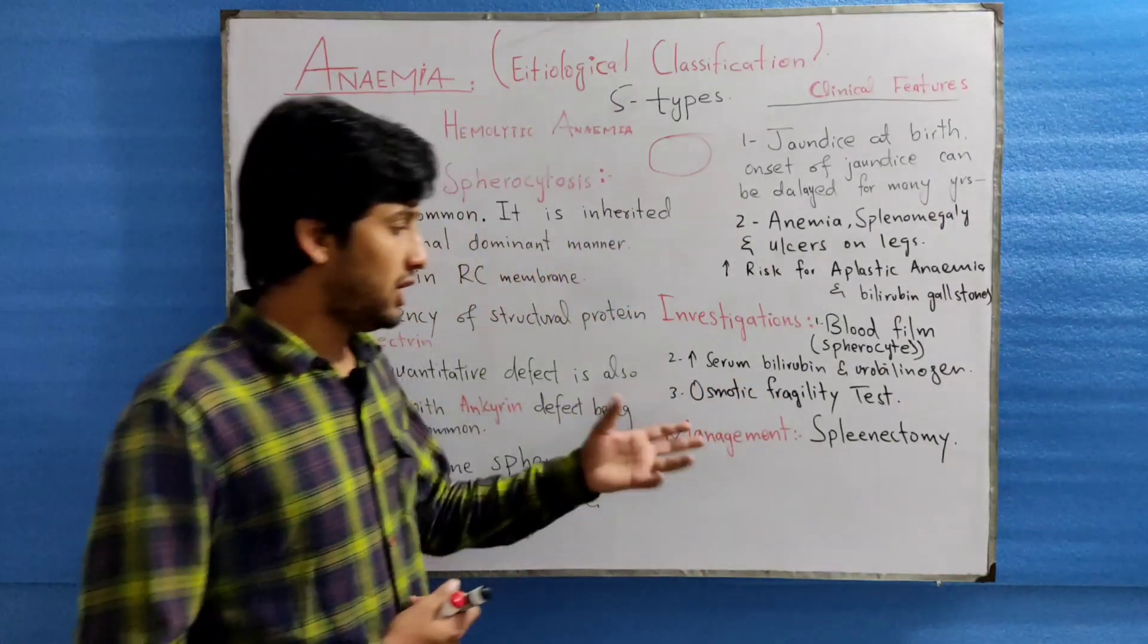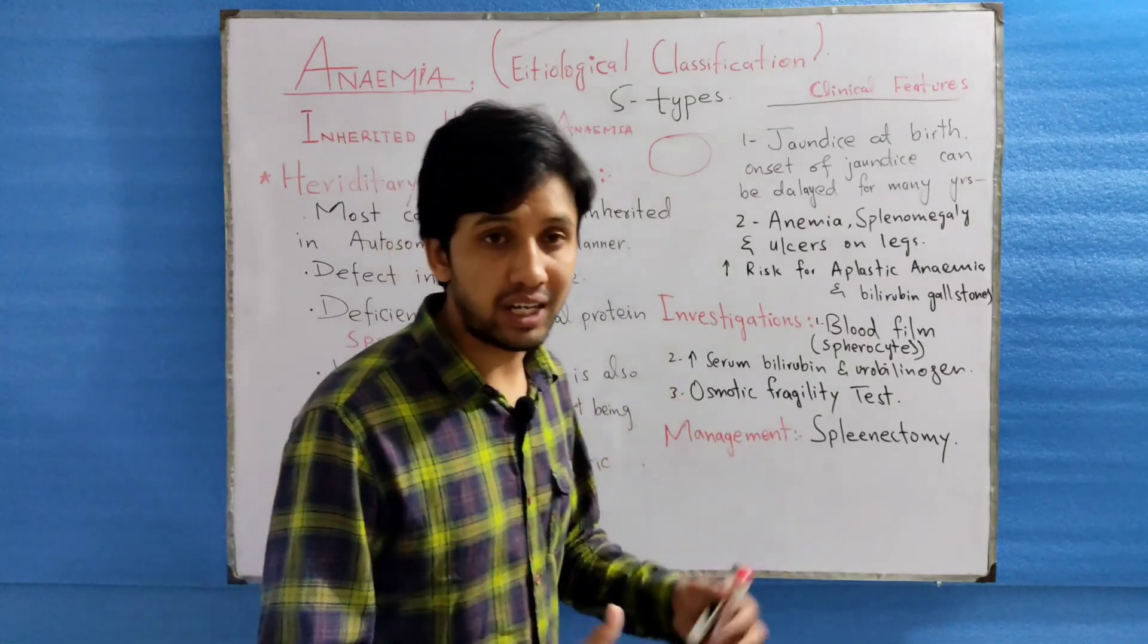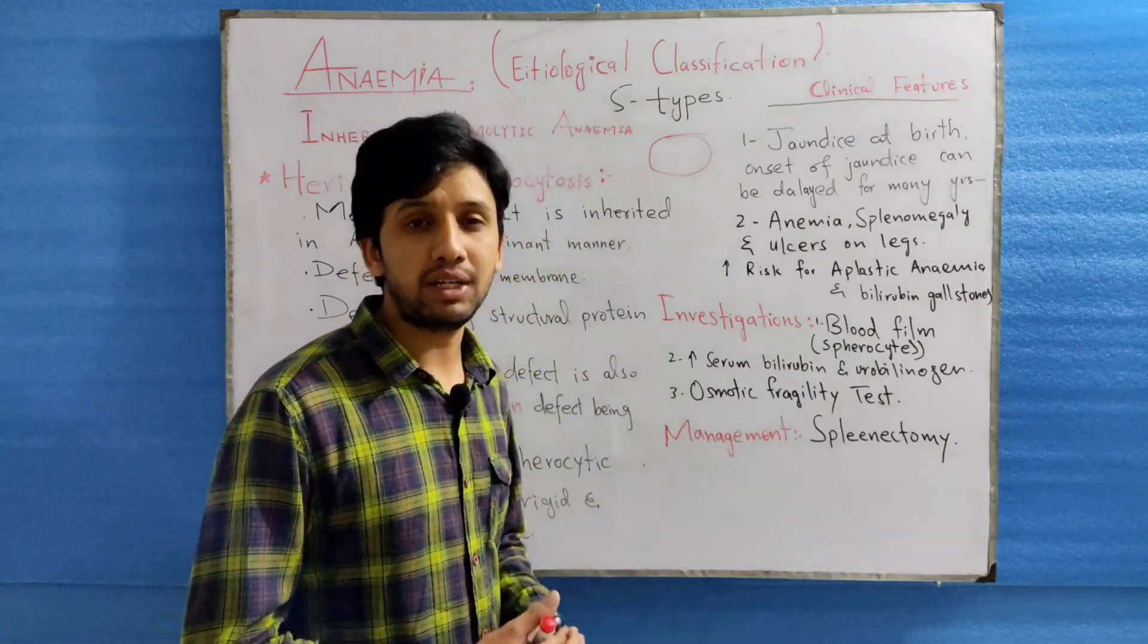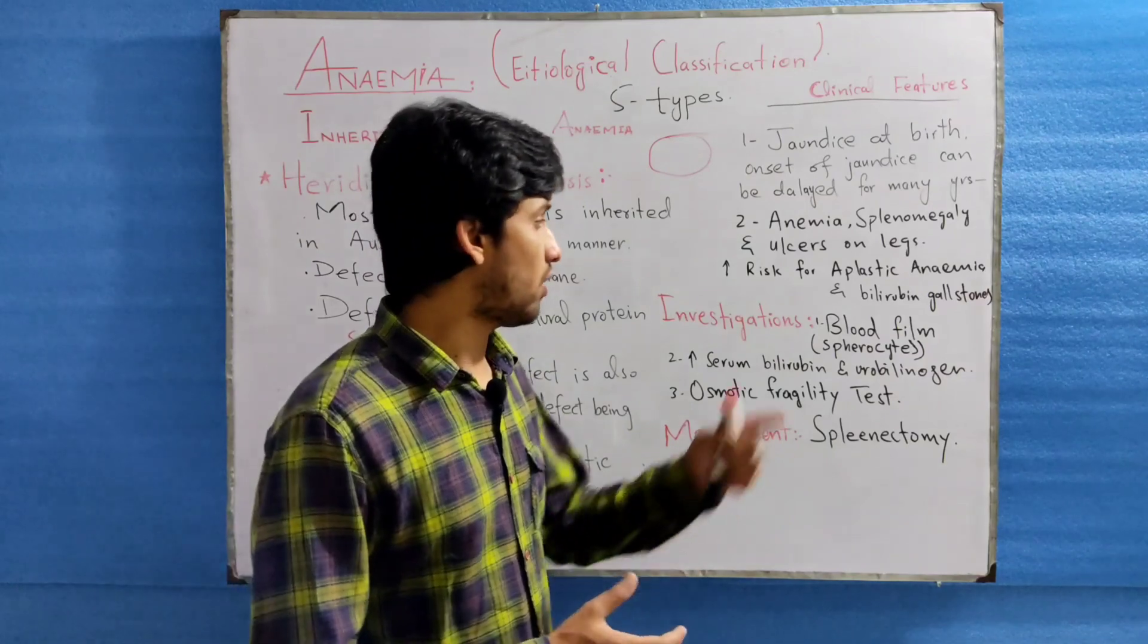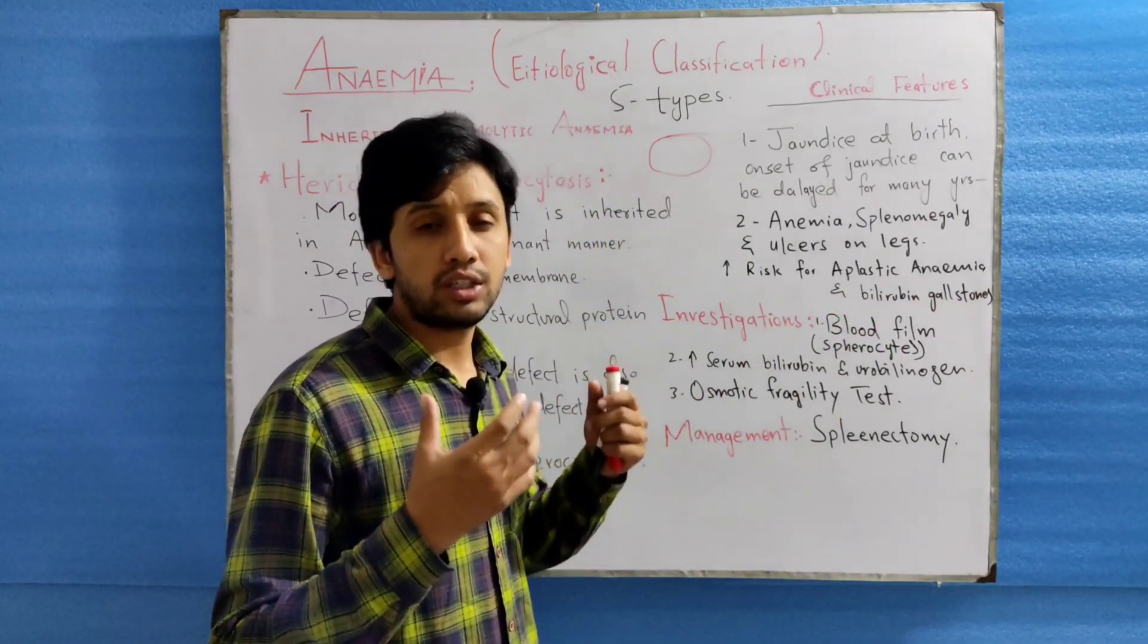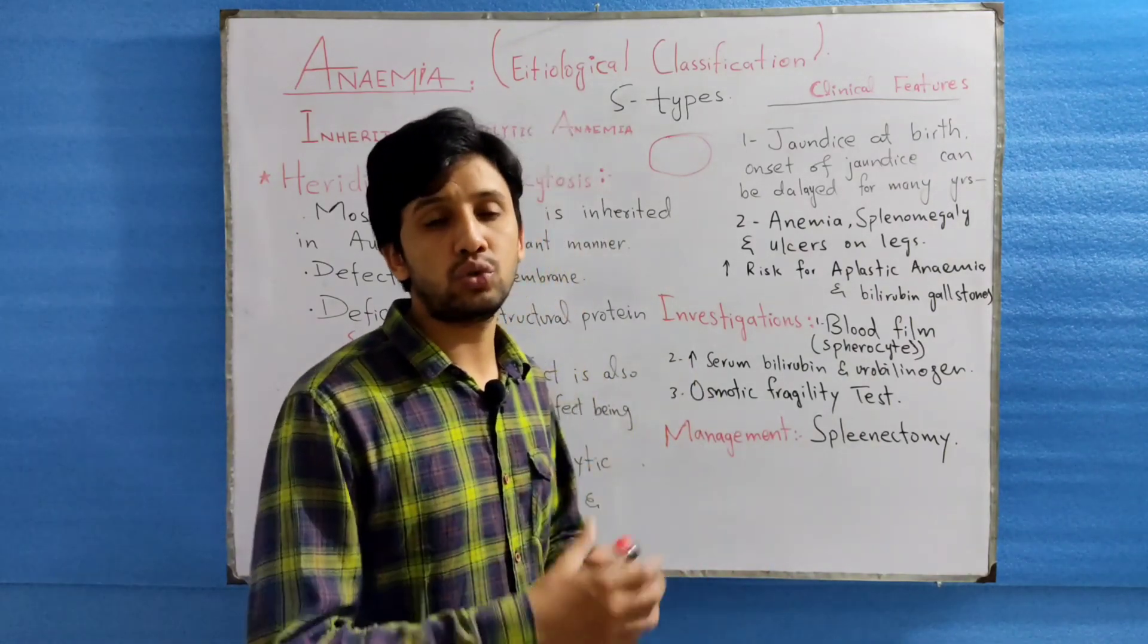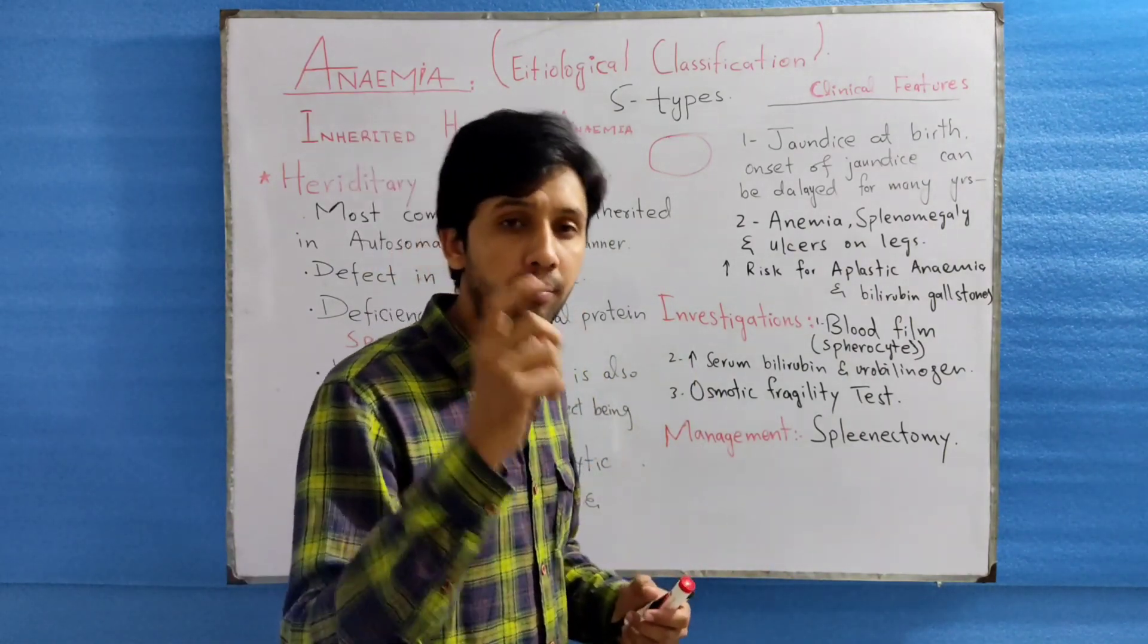Moving next is the management. Splenectomy is indicated and it will relieve the symptoms of anemia, splenomegaly, and reverse the formation of bilirubin gallstones. Splenectomy should be preceded by proper immunization and by the use of penicillin for prophylaxis.